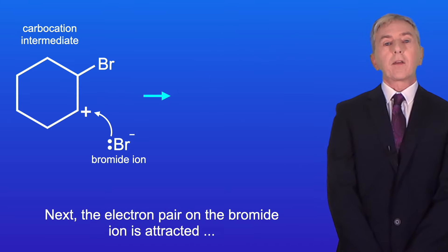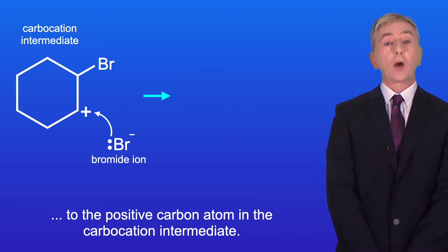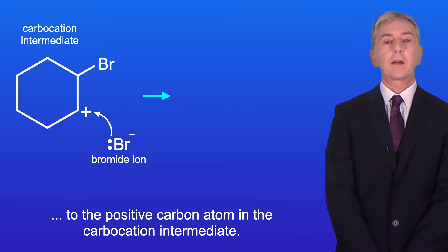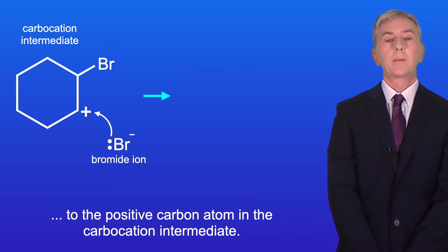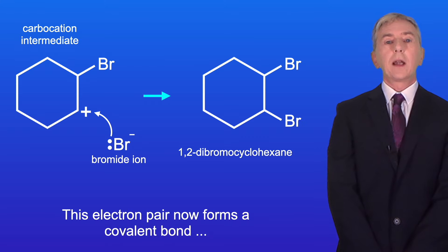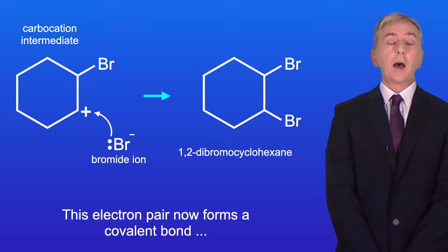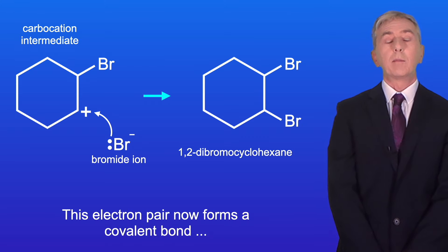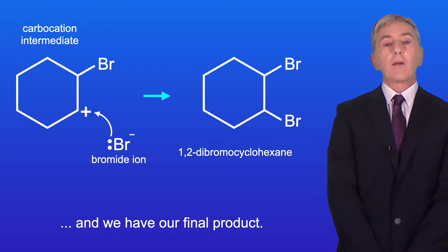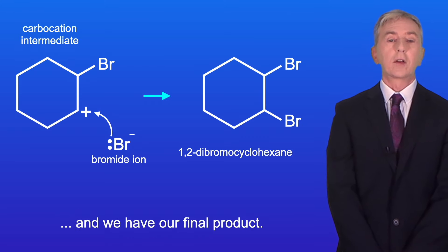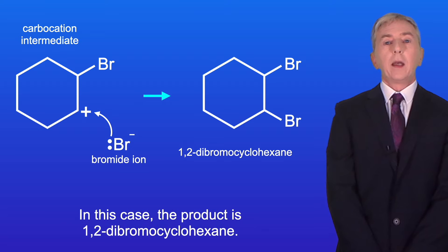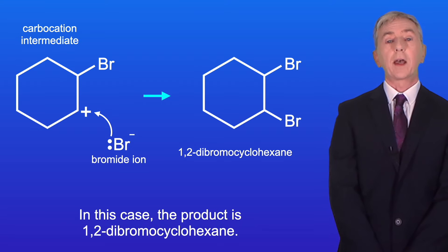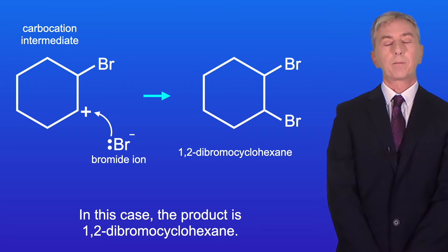Next, the electron pair on the bromide ion is attracted to the positive carbon atom in the carbocation intermediate. This electron pair now forms a covalent bond and we have our final product — in this case, 1,2-dibromocyclohexane.